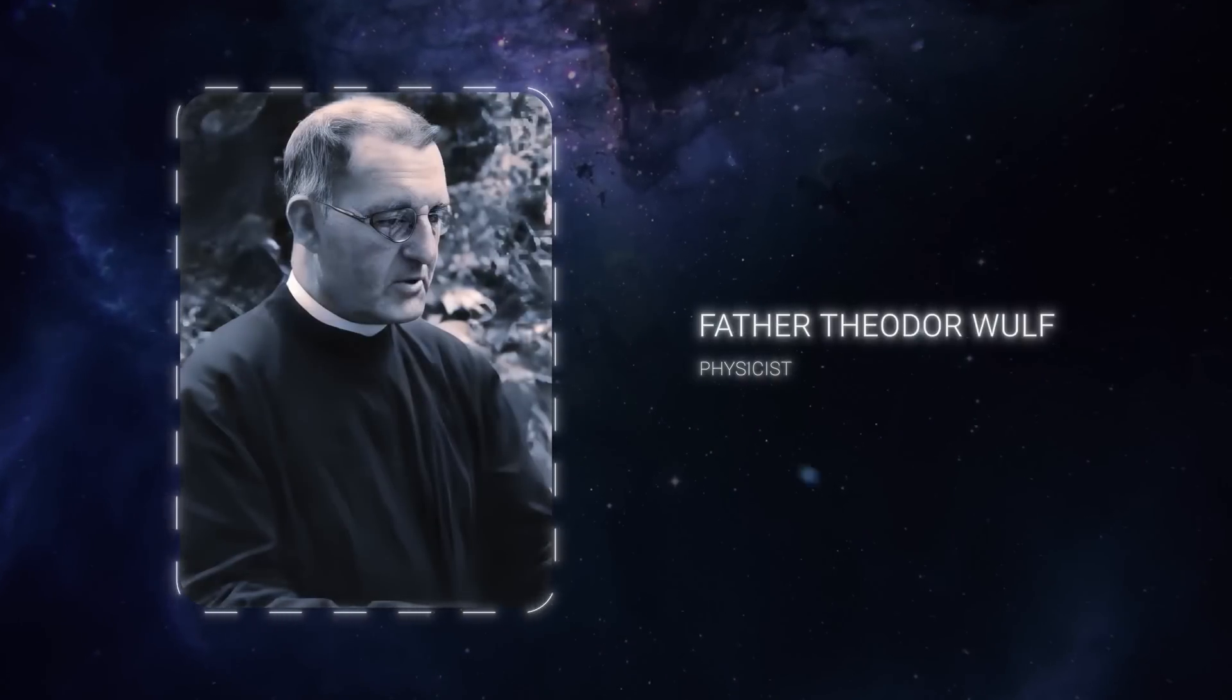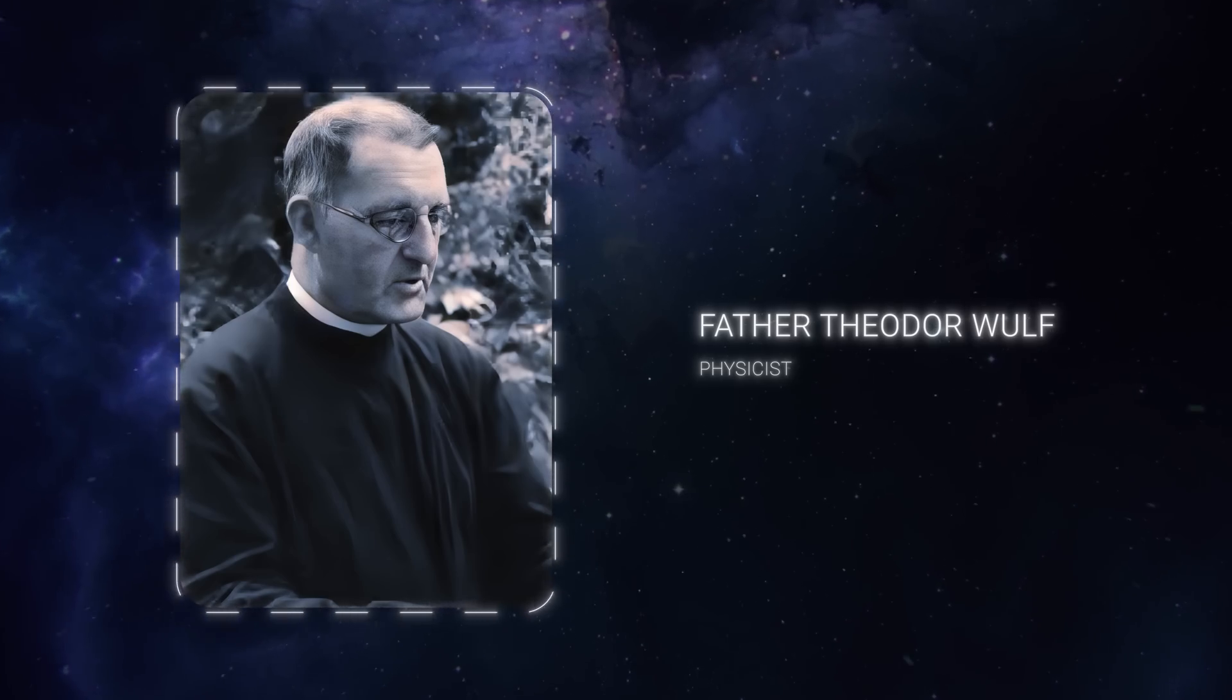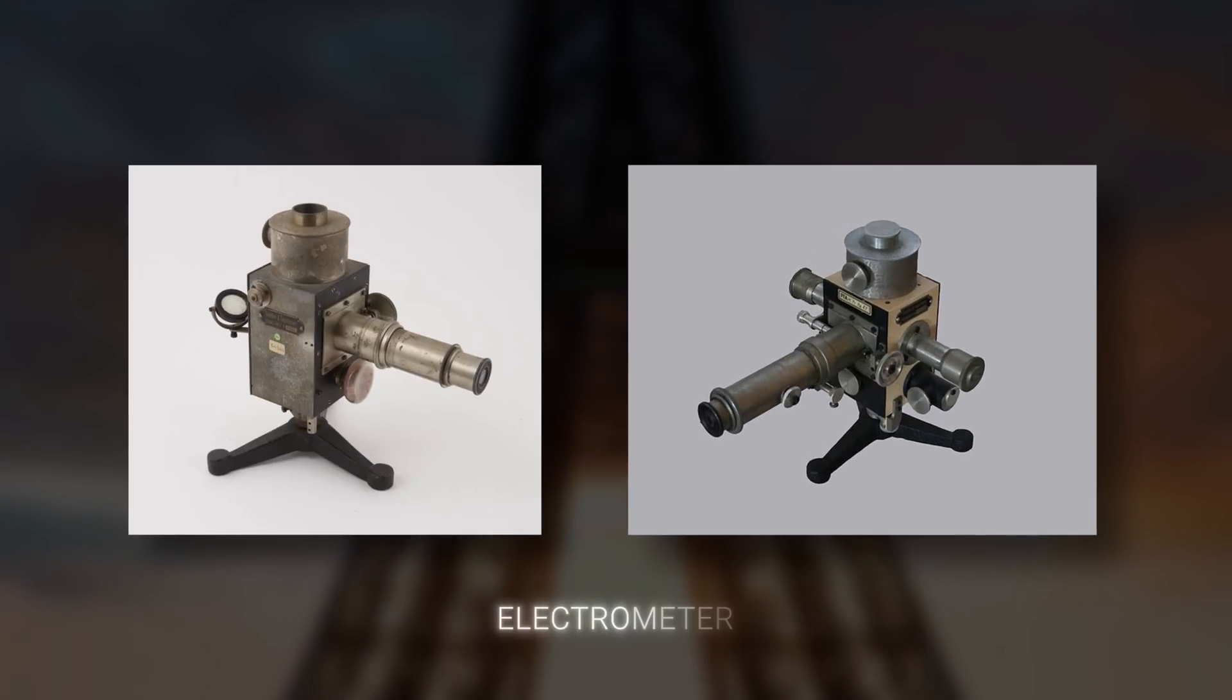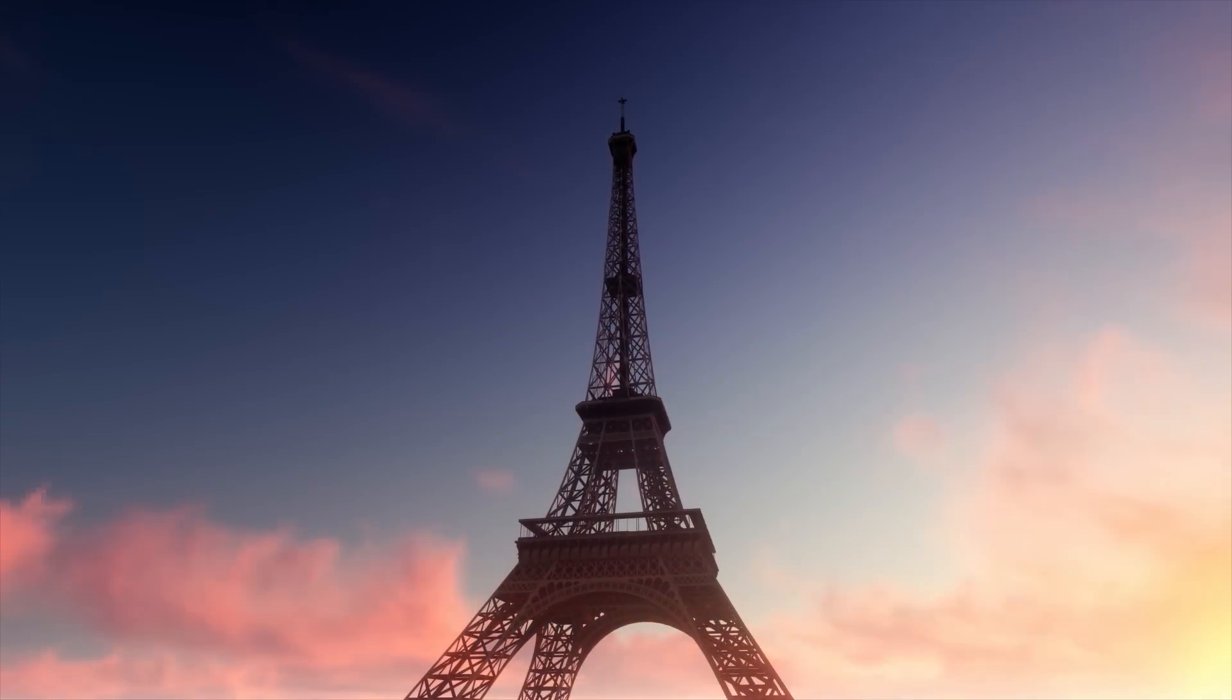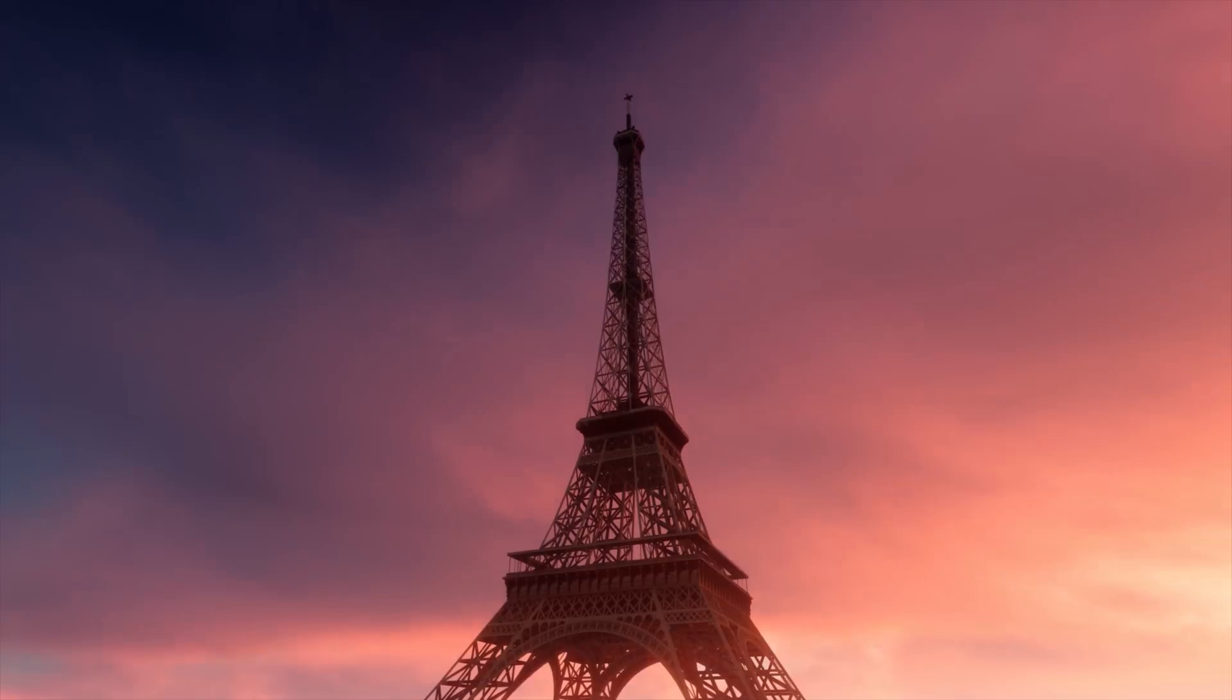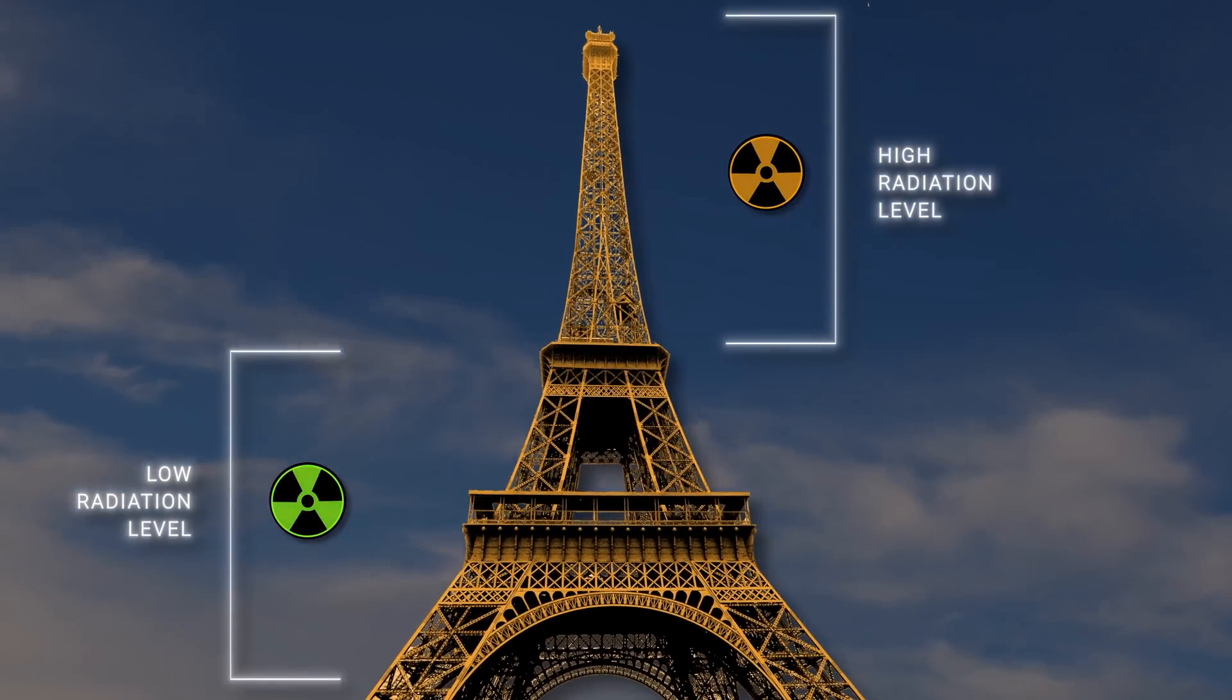It all started with Father Theodore Wolfe, a Jesuit priest and physicist. In 1909, he climbed the Eiffel Tower with a device of his own making, an electrometer. His goal was simple but bold: to measure ionizing radiation at different altitudes. Wolfe's observations revealed something unexpected. The radiation level at the top of the tower was higher than at the bottom.